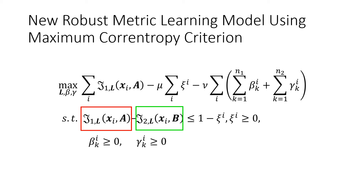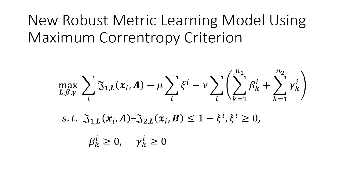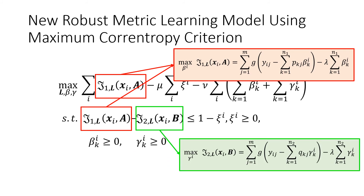We consider the metric learning model as a reconstruction problem, and enforce the intraclass reconstruction residual of each sample to be smaller than the interclass reconstruction residual by a large margin. We utilize co-entropy-induced metric to characterize this projected reconstruction residual.